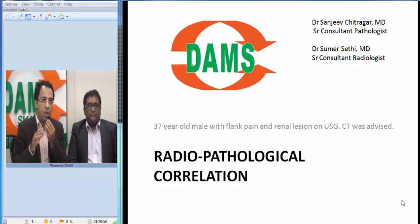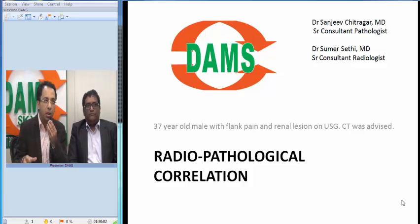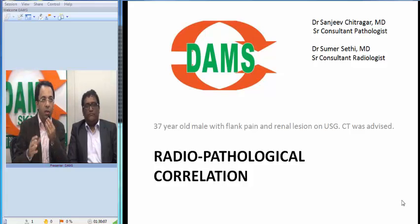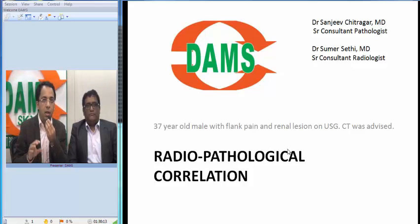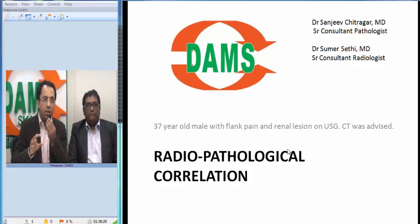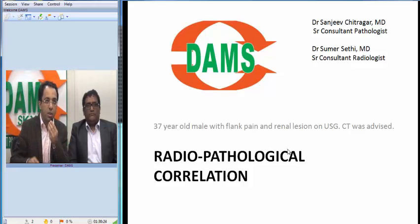Today we will share a case. I will present the radiological findings and invite Dr. Sanjeev to give his comments on the pathological findings of the disease. This is a 37-year-old male who has a history of flank pain, and there were some renal lesions on ultrasound. For further evaluation, a CT scan was advised. CT scan is the standard of care for most renal pathologies, so that is the next logical step.